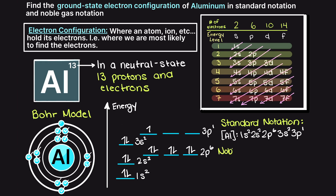Secondly, let's write out our noble gas notation. The noble gas that is the next lowest to aluminum is neon. Therefore we can consolidate this portion of the standard notation and write aluminum's electron configuration as [Ne] 3s², 3p¹. And there we go — we have just solved for aluminum's ground state electron configuration in the standard and noble gas notations.